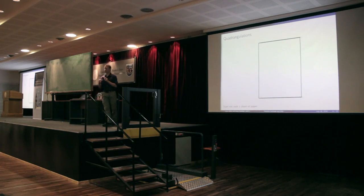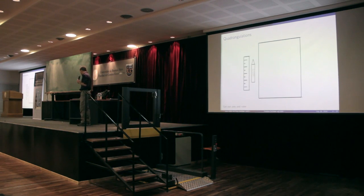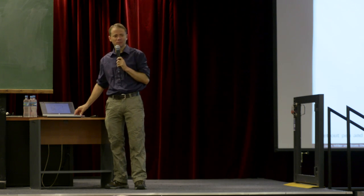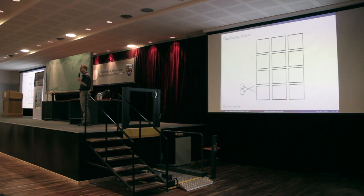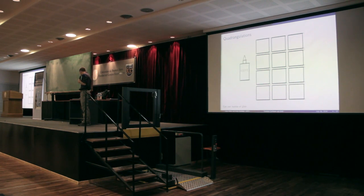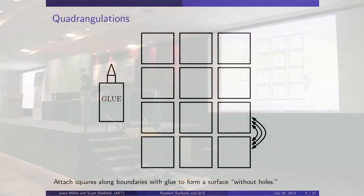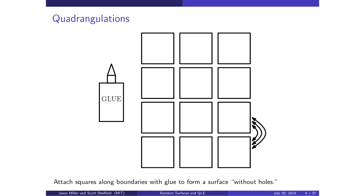I want to discuss the notion of a random surface. Imagine I give you a piece of paper, a pen, and a ruler. You divide the paper into squares of different sizes and cut the squares. Now you have your twelve squares, and you are going to randomly stitch them together. You'll find some glue, pick an edge, and glue one of these edges to the edge of another square.